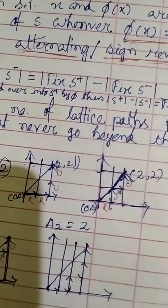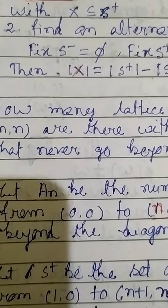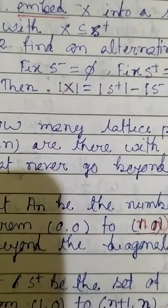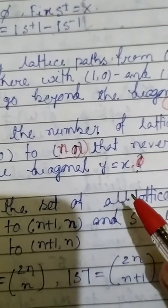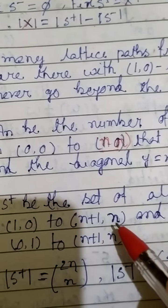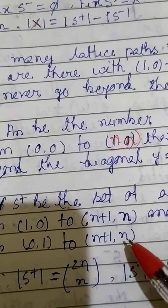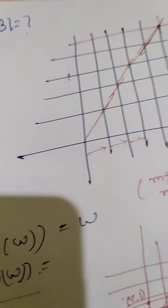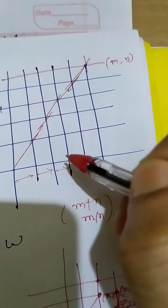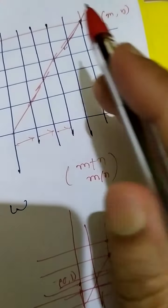Now we count this using the Involution Principle. Our objective is to find S-positive, S-negative, and the corresponding alternating involution. S-positive is the set of all lattice paths from (1,0) to (N+1,N), and S-negative is the set of all lattice paths from (0,1) to (N+1,N). The number of lattice paths from (0,0) to (M,N) is C(M+N, M).